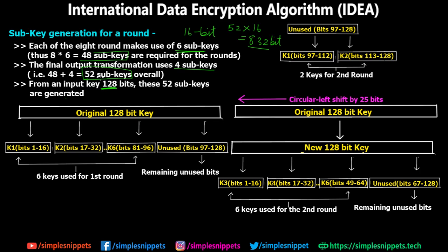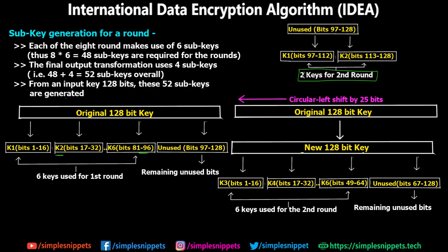We've seen circular shift of bits in previous videos on this network security playlist — in the algorithm modes video and the DES algorithm video. Originally we have a 128-bit key. For the first round, K1 through K6 are formed from bits 1–96 (each key is 16 bits: K1 is bits 1–16, K2 is bits 17–32, and so on through K6 using 96 bits). The unused bits are 97–128, so K1 and K2 for the second round come from bits 97–112 and 113–128.